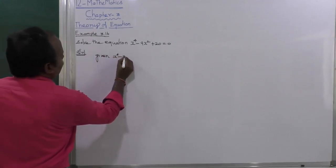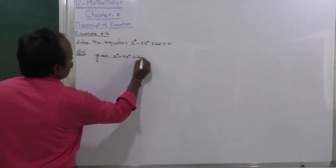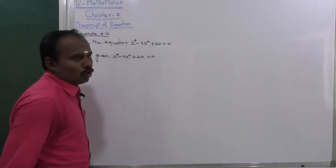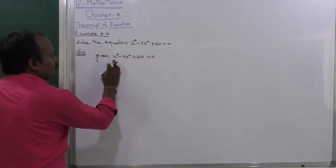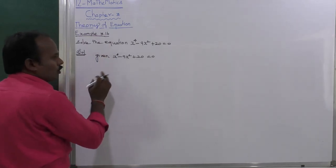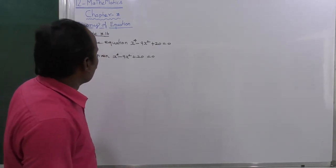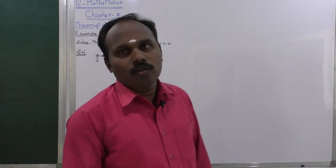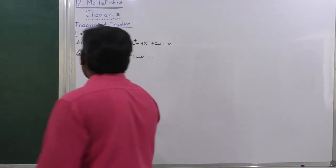x^4 - 9x^2 + 20 = 0. To convert the degree from 4 to 2, we need to reduce the degree. To reduce the degree, let us consider: